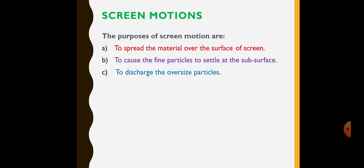Screen motions. The purposes of screen motions are to spread the material over the surface of the screen, to cause the fine particles to settle at the subsurface, and to discharge the oversize particles. These are the purposes of screen motions.